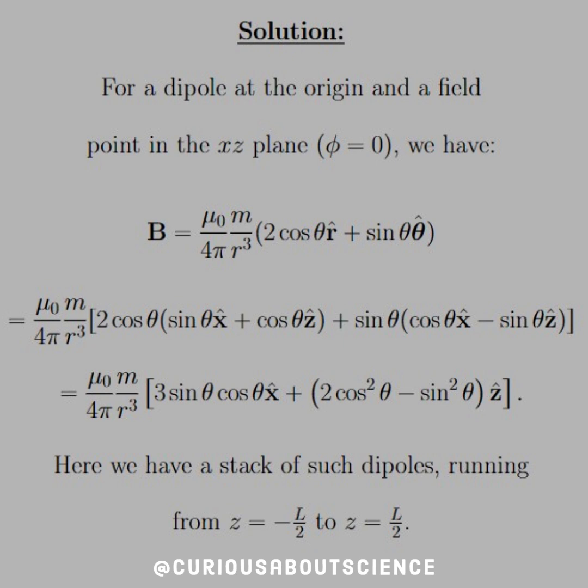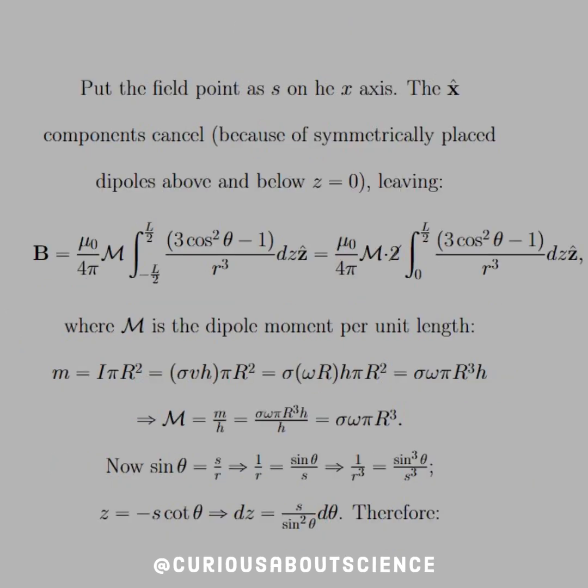And here we see that for a stack of dipoles, a stack of such dipoles running from z equal negative L over two to z equal L over two, we can now put a field point at s on the x-axis, which we talked about. The x components cancel because of symmetrically placed dipoles above and below z equals zero. Okay, that makes sense. We get cancellations there. So we now have B equal mu naught over four pi, big M integrated from negative L over two to L over two of three cosine squared theta minus one over r cubed dz z hat.